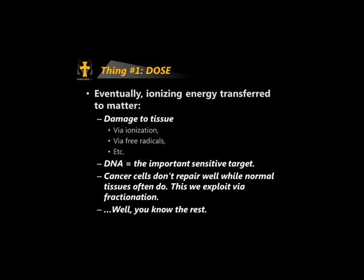Why don't cancer cells repair as well? At a high level, cancer cells are really good at dividing and multiplying but kind of stupid when it comes to cell repair. Healthy, highly differentiated cells — like nerve cells — don't divide at all, so they need to be very good at repair. Cancer cells are screwed-up cells that are great at dividing but not at repair. With every fraction we try to knock down cancer cells a little more than normal tissues, which we hope will heal or replenish.